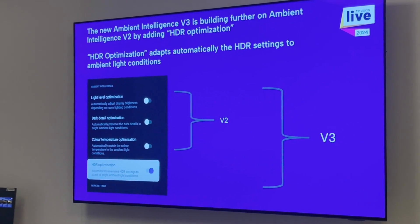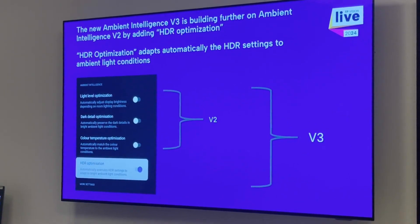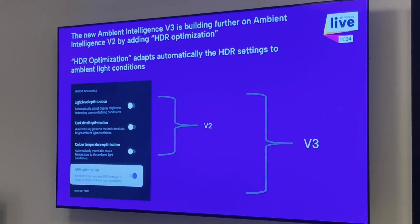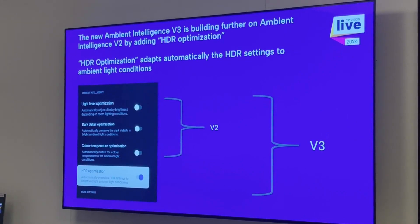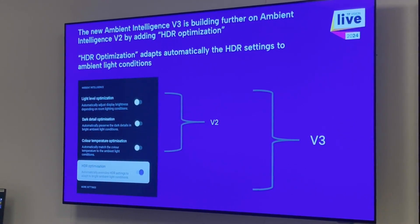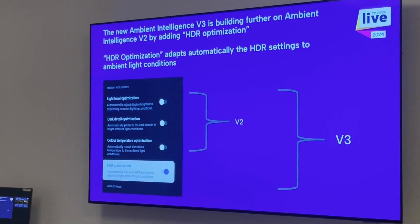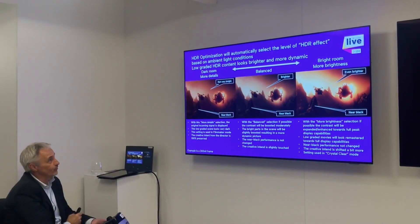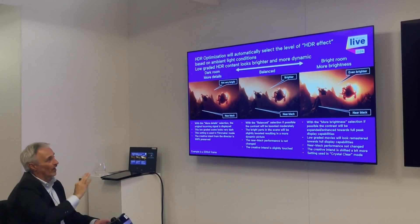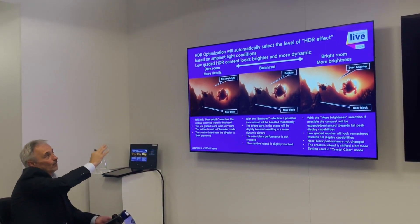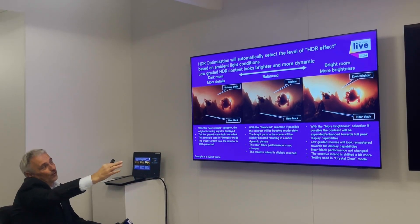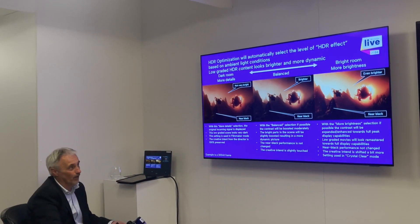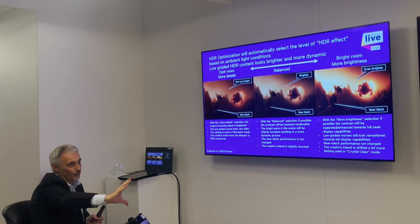We have a new Ambient Intelligence V3. The V2 version had three elements: light level optimization, dark detail optimization, and color temperature optimization. Version 3, coming in 2024, adds one additional element called HCR optimization. It performs HCR processing coupled with the light sensor, giving more or less brightness. In a dark room it will follow exactly the Filmmaker mode director intent with no enhancements, but as the room gets brighter and the light sensor measures it, we give you more brightness — shifting the creative intent slightly, but not a lot.